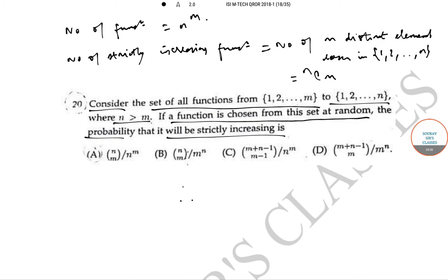Therefore, required probability is the number of ways in which you can select m distinct elements i.e. ncm by the total number of functions that are possible which is n to the power m. So, option a is the correct answer.